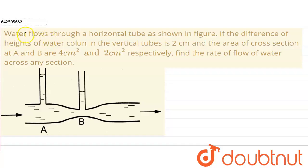Hello everyone, so our question is: water flows through a horizontal tube as shown in the figure. If the difference in the height of the water column in the vertical tube is 2 cm and the area of the cross section at A and B are 4 cm² and 2 cm² respectively, find the rate of flow of water across any section.